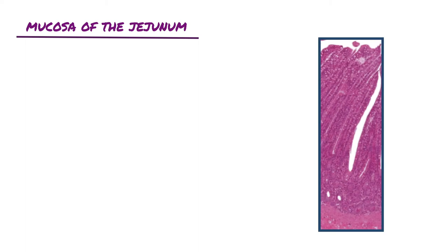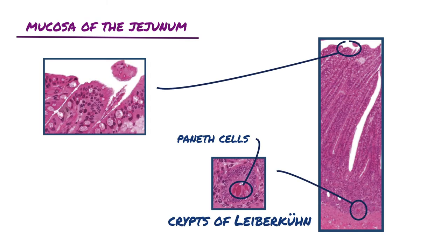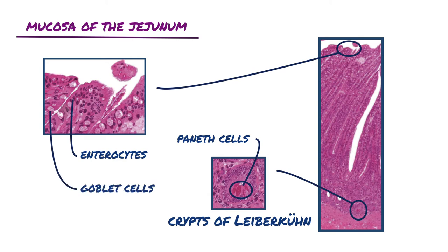Looking at a section of the jejunum, we can see that the mucosa shares the same characteristics as the duodenum's mucosa, including the crypts of Lieberkühn, Paneth cells, enterocytes with their microvilli, goblet cells, lamina propria, and muscularis mucosa.